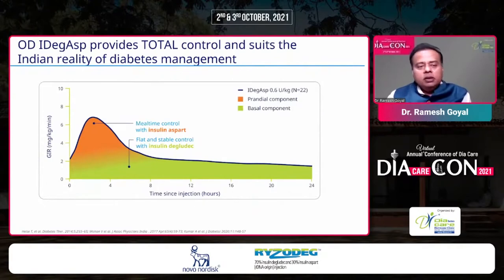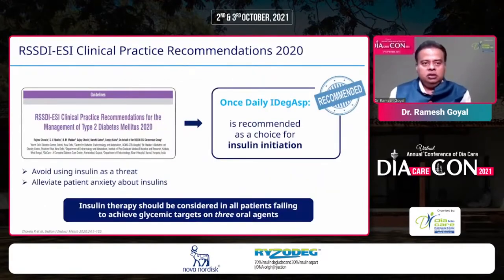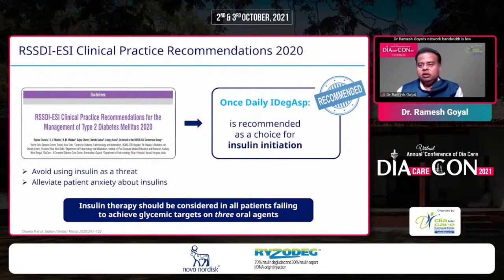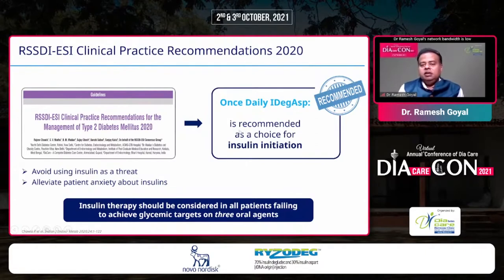When it comes to insulin initiation, what do different guidelines suggest? Most international guidelines recommend initiating with a basal insulin. However, the RSSDI and Endocrine Society of India clinical practice recommendations of 2020 state that we can initiate once daily with IDegAsp. It is recommended as a choice of insulin initiation alongside basal insulin, meaning you may start with this co-formulation at insulin initiation itself.